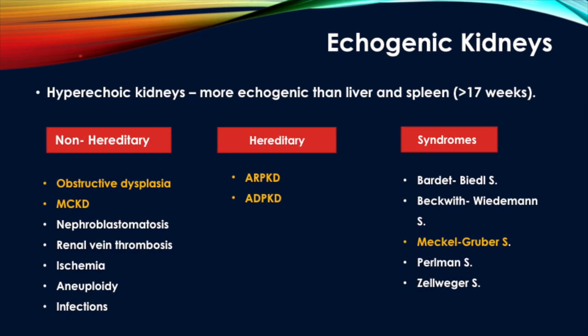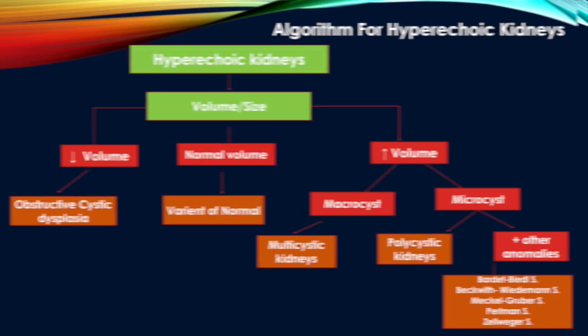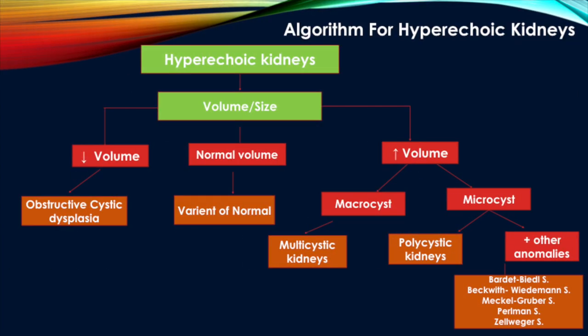When kidneys are more echogenic than liver and spleen after 17 weeks they are called echogenic kidneys. Common non-hereditary causes are obstructive dysplasia and multicystic kidney disease. Rare causes include nephroblastomatosis, renal vein thrombosis, ischemia, aneuploidies, and infections. Common hereditary causes include the autosomal recessive and dominant types of polycystic kidney disease. Echogenic kidneys are also a part of certain syndromes.